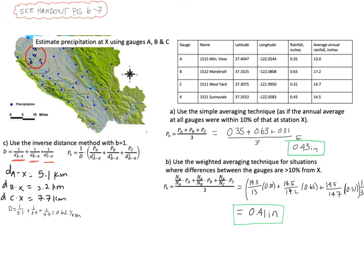Now we can come over here and use this in our equation. And we will estimate in this case that the precipitation at point X is 1 over 0.62, which is again that D, times 0.35, the precipitation at point A for the storm, divided by 5.1 plus 0.63, the precipitation at B, divided by 3.2, distance from B to X, plus 0.31, divided by 7.7, which is equal to 0.48 inches.